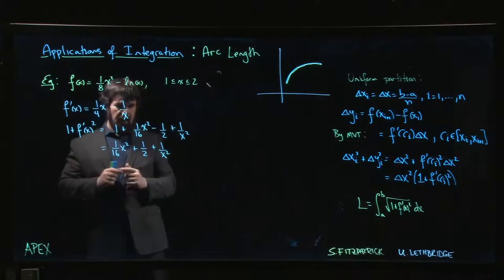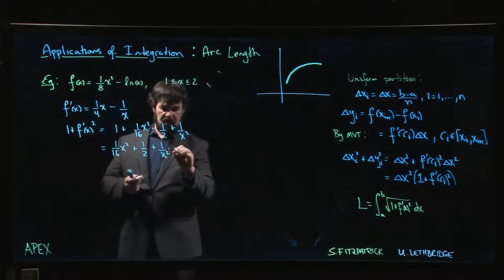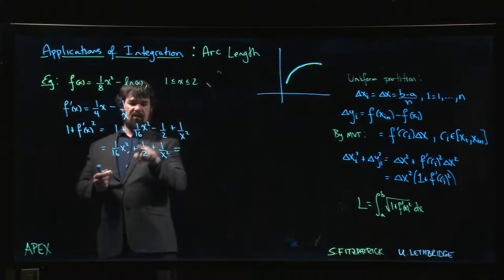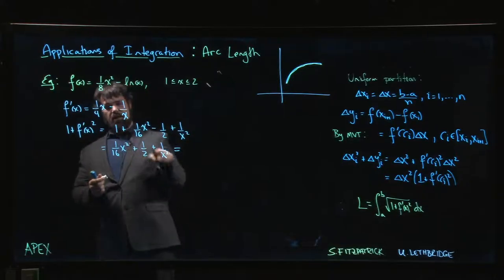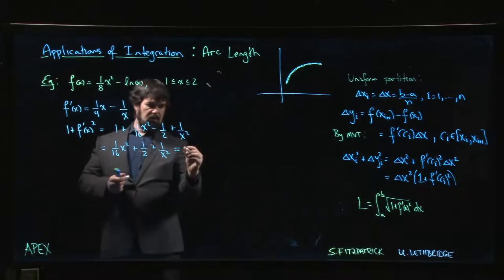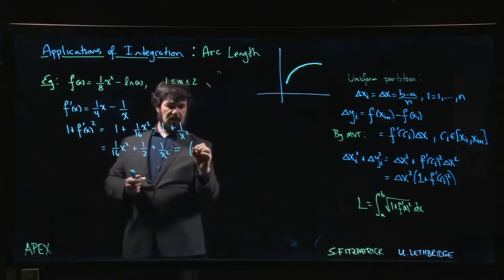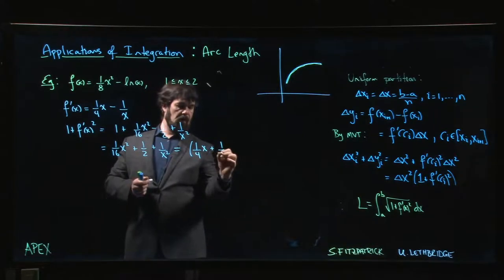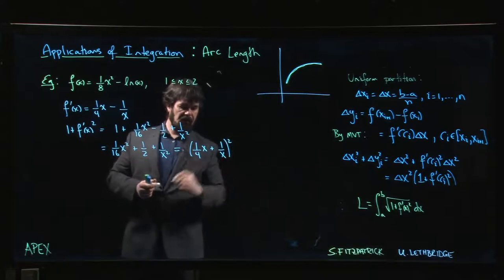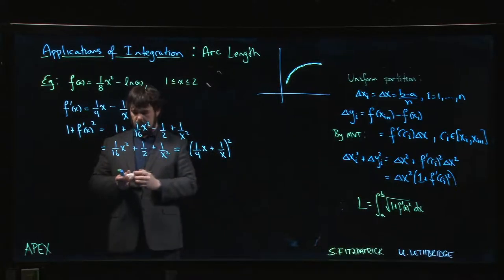You'll find this pattern fairly often, so beware of it. If you see this sort of the same thing but with the opposite sign, that tends to tell you how to go back. You might not immediately look at this and realize that that's a perfect square, so referencing back to the thing you started with tends to help spot what's going on. So now we get (1/(4x) + 1/x)^2.